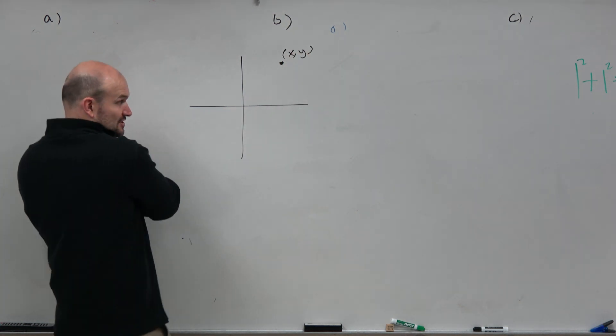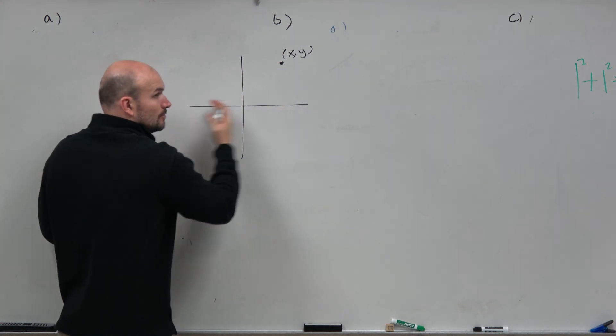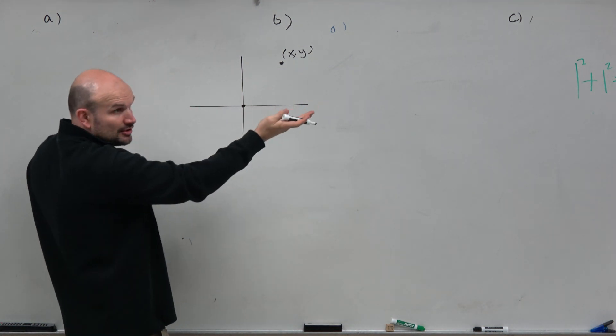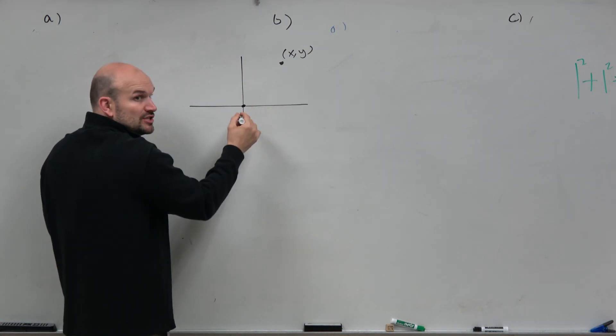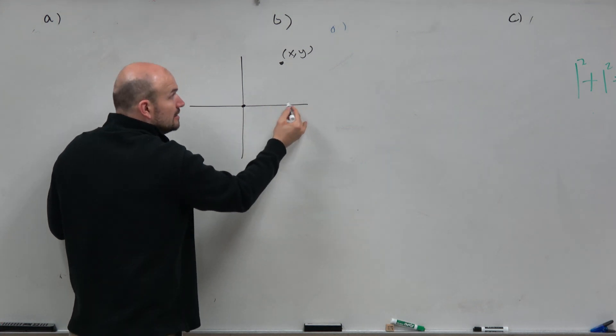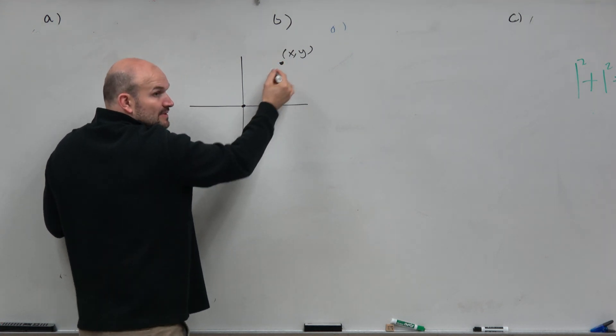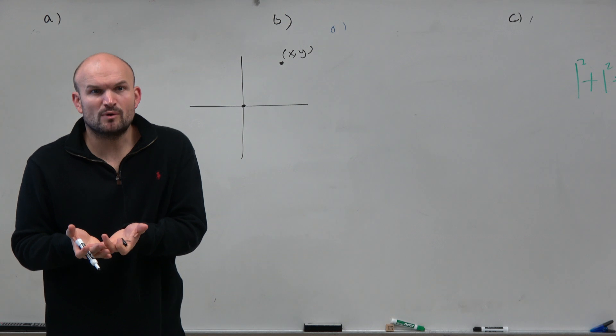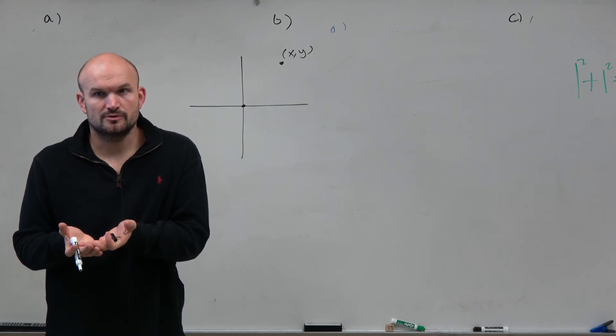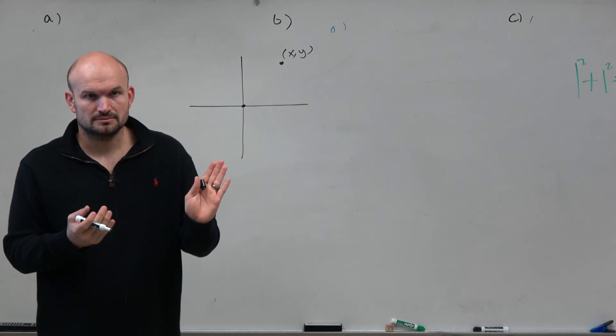We know that x tells us how far away we are from the origin. When we plotted those points, we basically counted from the origin. So we go x this way, and then we go y that way. Do we have another distance away from the origin? Can we also just do a straight line? Yeah, right?